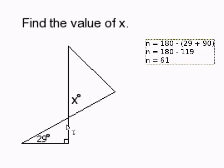So our missing angle here, I call it n, is equal to 61 degrees.